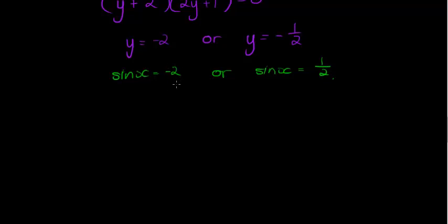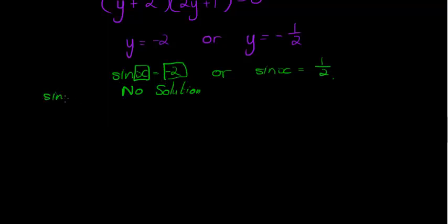Whether you use your calculator or common sense, sinx = -2 has no solution — it's impossible. No matter what value you use for x, you can never get -2 because sinx always satisfies -1 ≤ sinx ≤ 1. However, sinx = -1/2 can be solved: the reference angle is 30°, and then you find the general solution as usual.